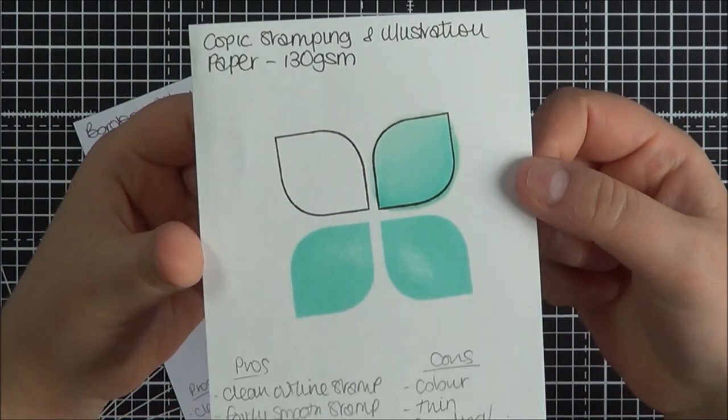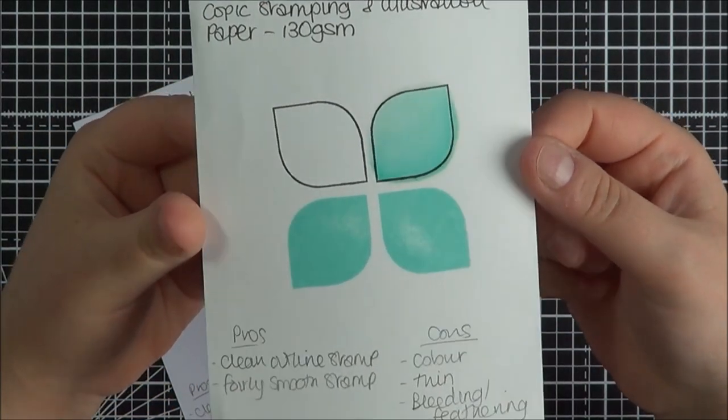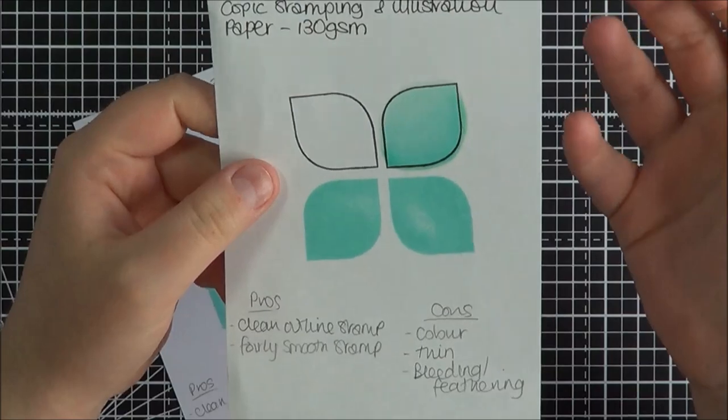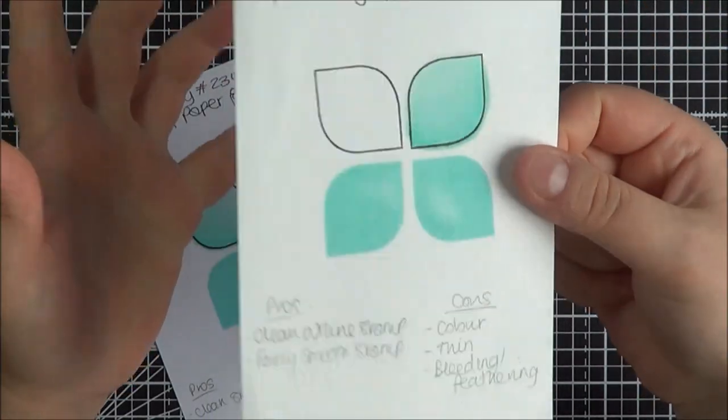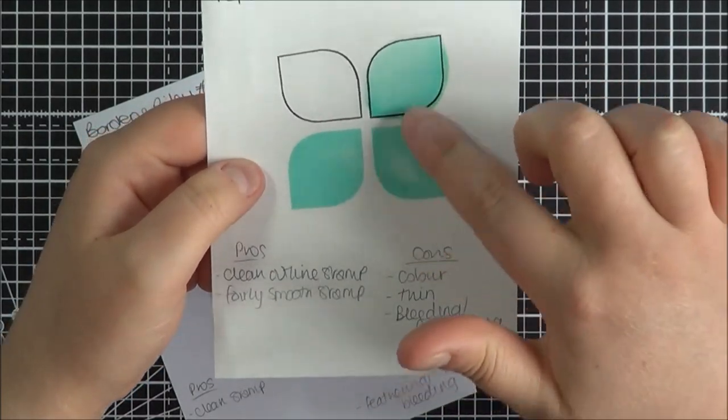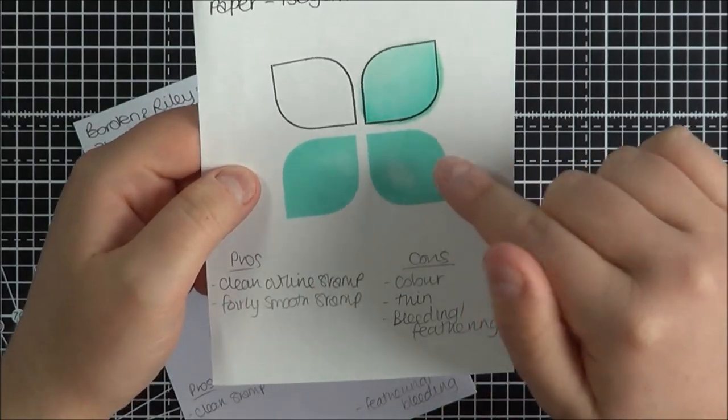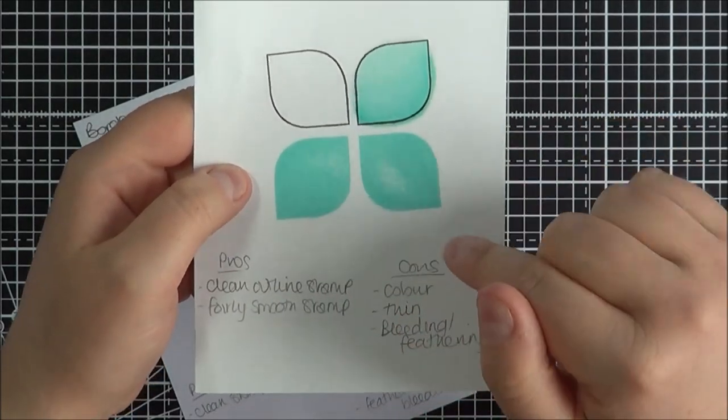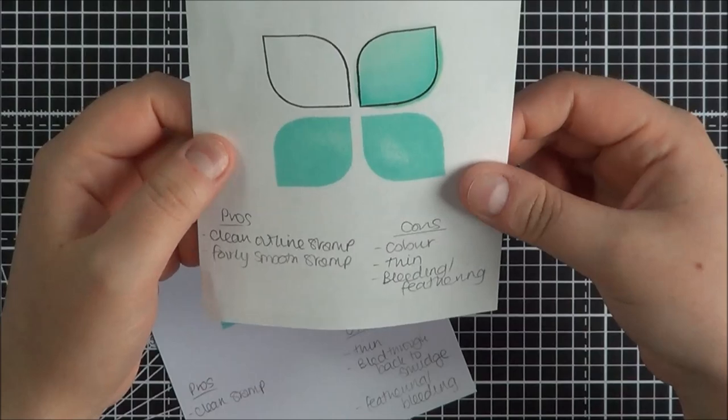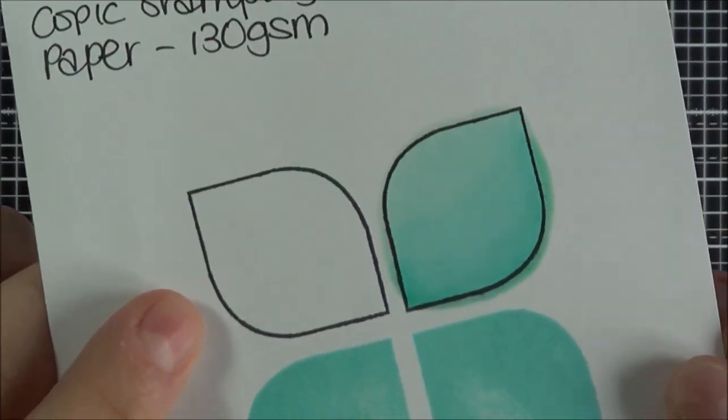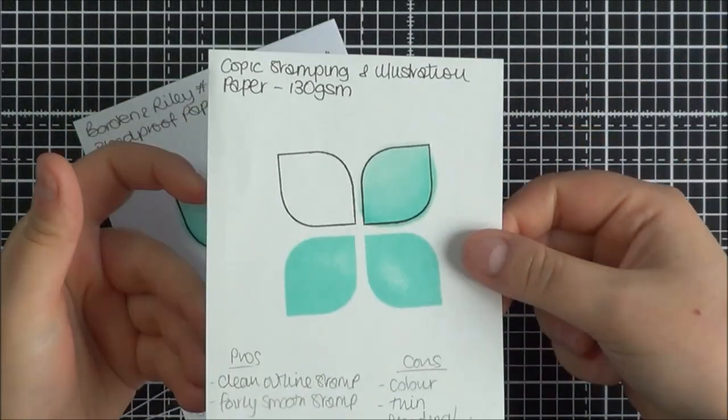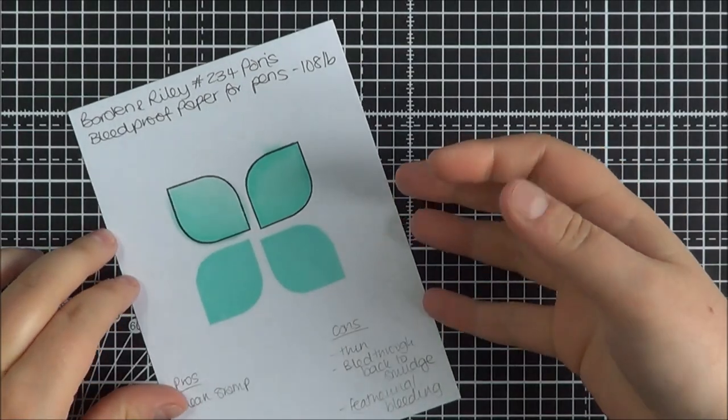I then tried the Copic Stamping and Illustration paper. This is 130 GSM. This is just paper basically. I know it's supposed to be paper but it is paper. But I tried it anyway. It's really quite more of a cream color. Nice outline stamping. Fairly smooth. You know other stamping. I did miss some bits. Again I don't know if that's me or that's the paper or the ink. However there was absolutely loads of feathering there and bleeding. Again I don't know if that's just how I'm using the Copic markers but not for me.